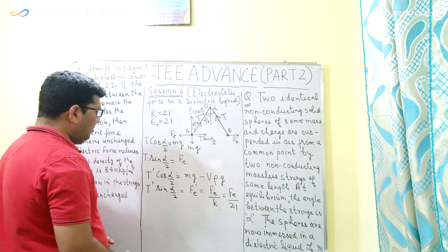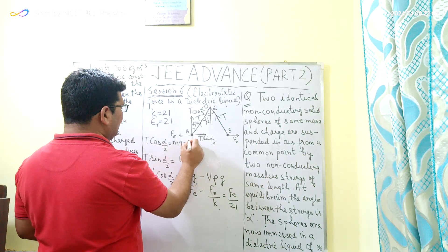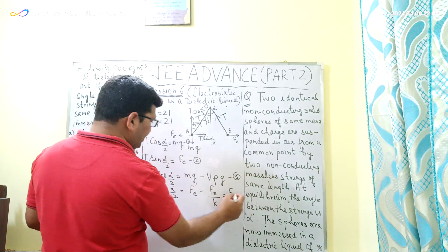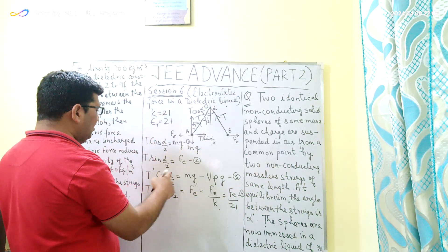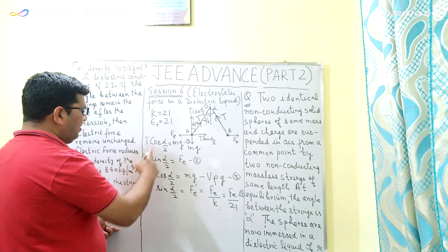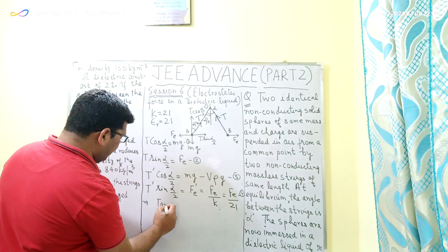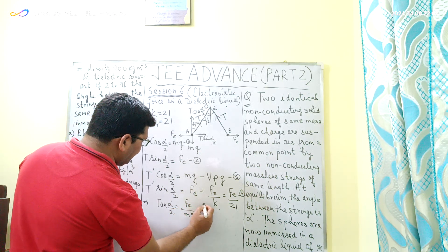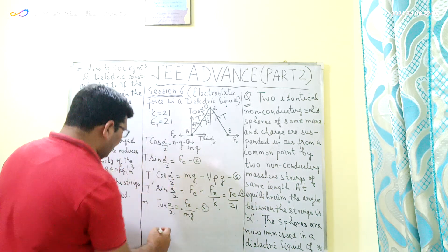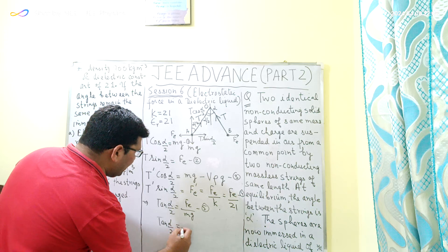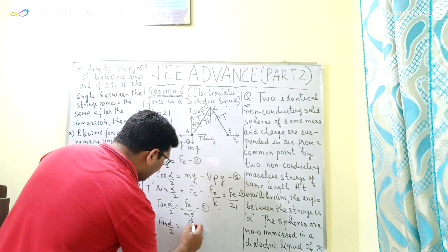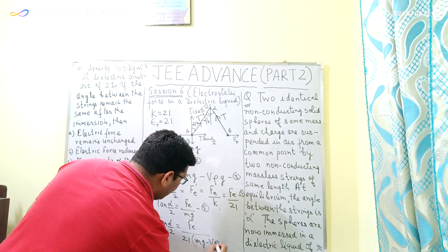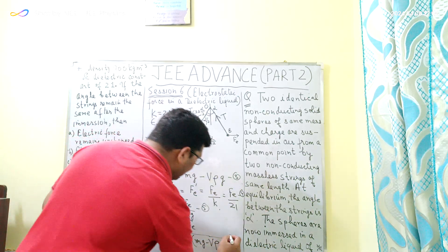I now have four equations. From equations 1 and 2: T sin(alpha/2) / T cos(alpha/2) = tan(alpha/2) = Fe / mg — call this equation 5. Similarly, from equations 3 and 4: tan(alpha/2) = (Fe/21) / (mg − V·rho·g) — call this equation 6.